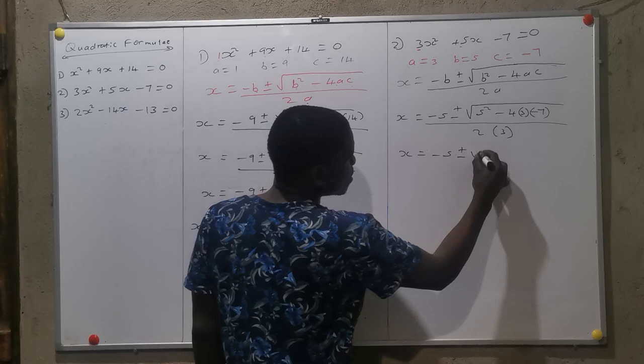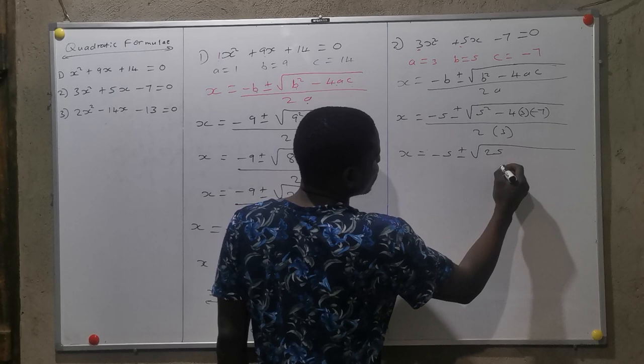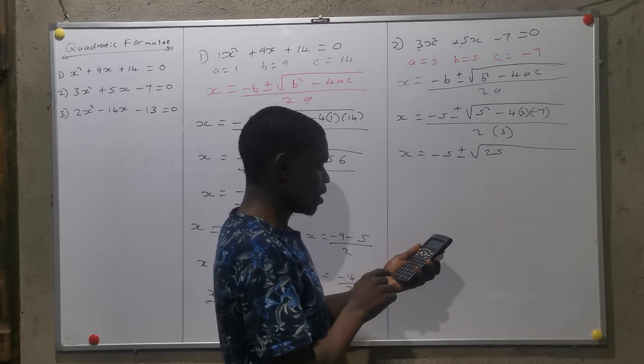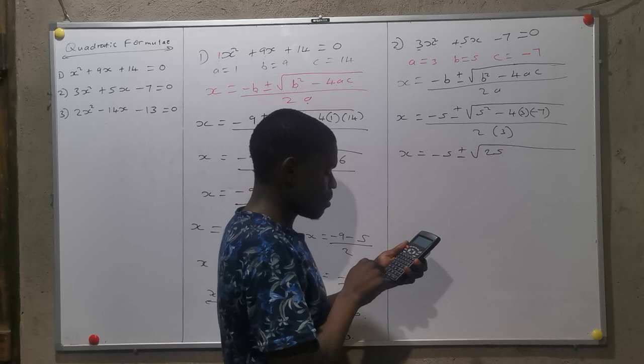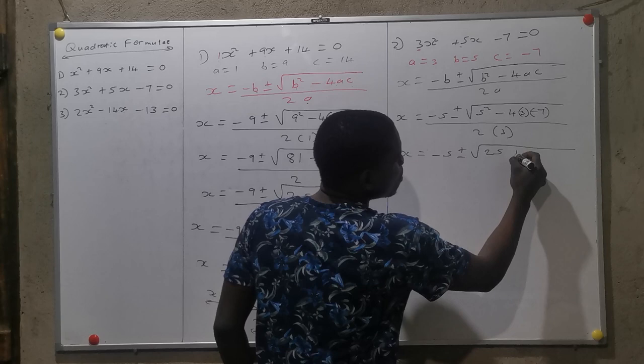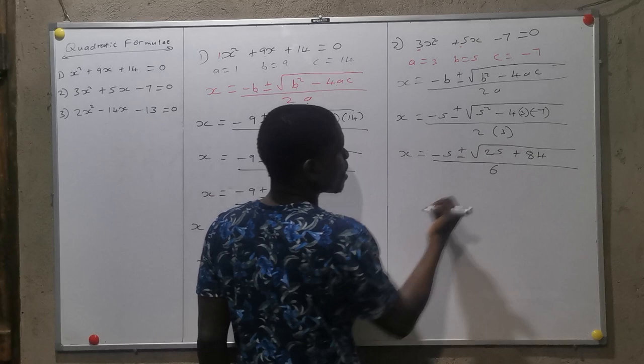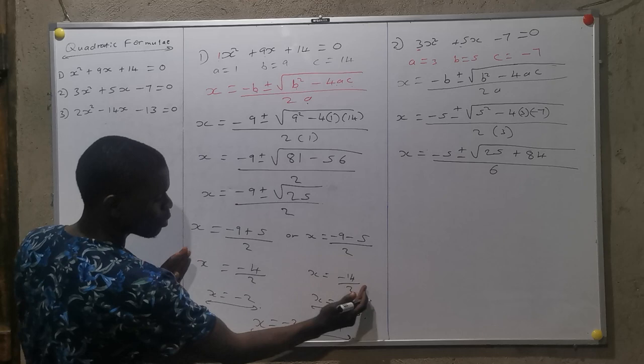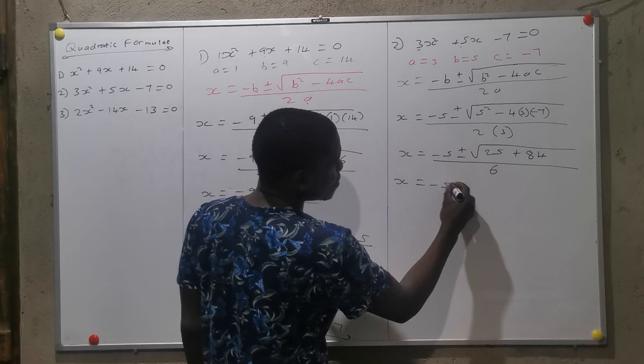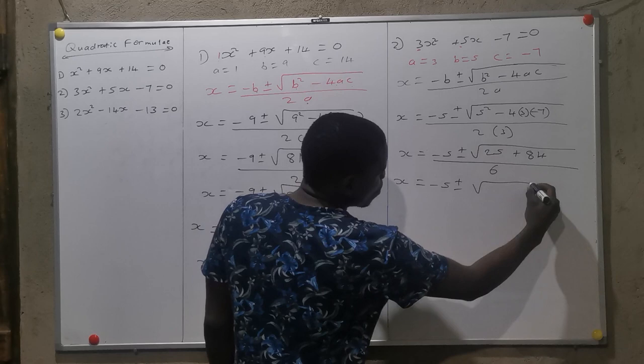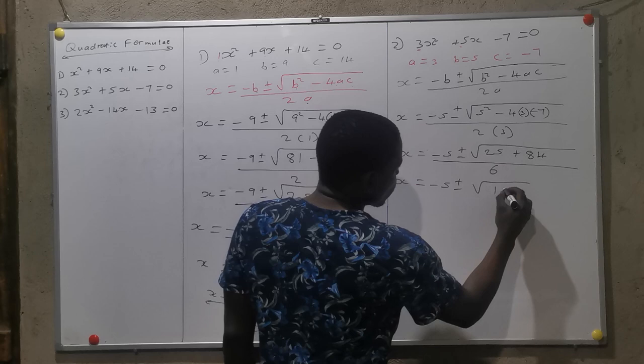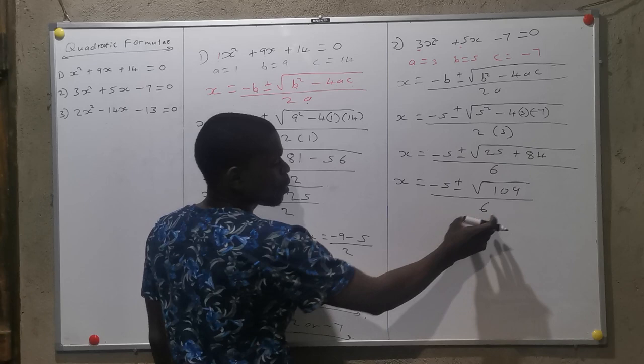Then X equals minus 5 plus or minus the square root of 25 - then I go to my calculator. Minus 4 times 3 times minus 7, which equals 84. So it's positive 84. All over 6, which is 2 times 3.